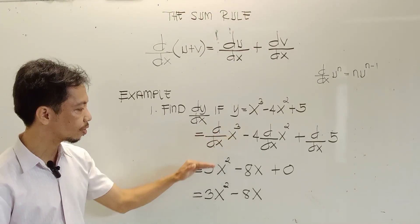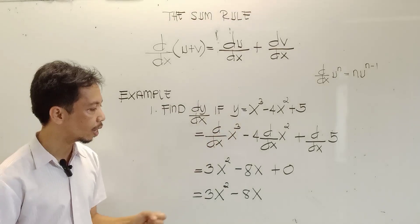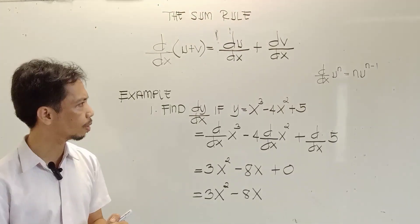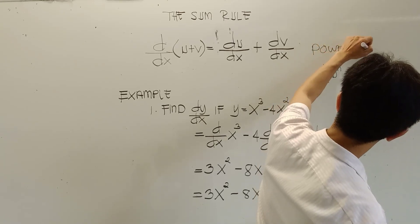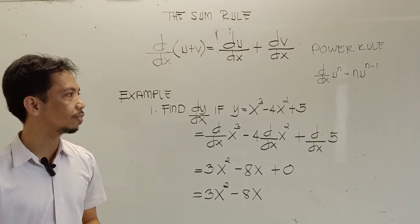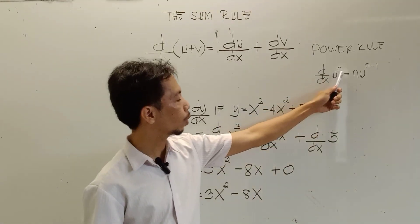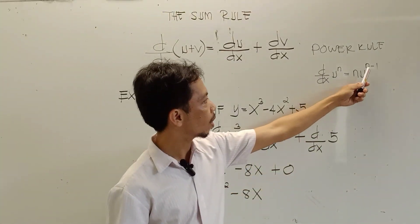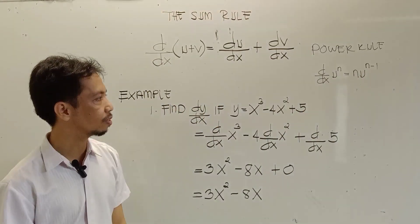The derivative of x cubed is 3x squared. In this case, we have an exponent, so we are going to apply what we call the power rule. The power rule states that the derivative of a variable with exponent n is equal to n as the numerical coefficient of your variable, then subtract n by positive 1.